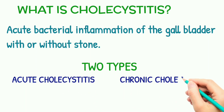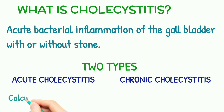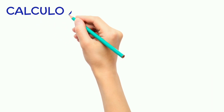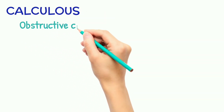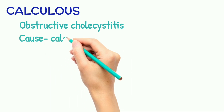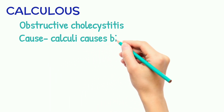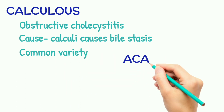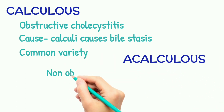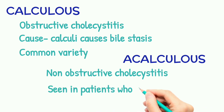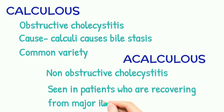In acute cholecystitis, there is a calculus and acalculous type. Calculus cholecystitis is an obstructive type caused by calculi, leading to bile stasis, and is the more common variety. Acalculous cholecystitis is non-obstructive and is seen in patients who are recovering from a major illness.